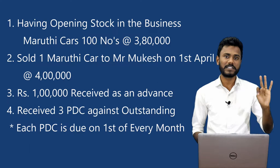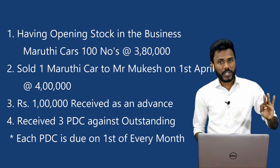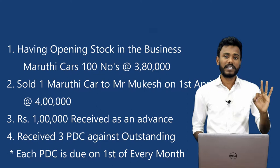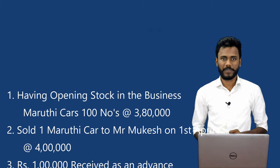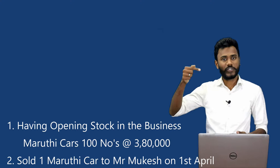Each check contains 1,00,000 and each check is due on the 1st of every month. We are receiving the checks on 1st April — three checks. The three checks are due on three individual first-of-month dates: one is due on 1st May, one is due on 1st June, and the other one is due on 1st July. Now we will see how to record these transactions in Tally application.